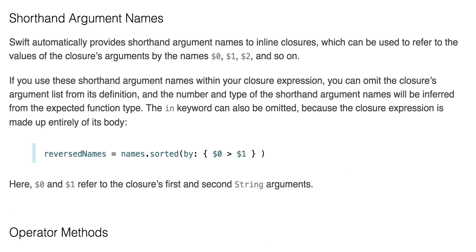Shorthand argument names: Swift automatically provides shorthand argument names to inline closures, which can be used to refer to the values of the closure's arguments by the names $0, $1, $2, and so on. If you use these shorthand argument names within your closure expression, you can omit the closure's argument list from the definition, and the number and type of the shorthand argument names will be inferred from the expected function type. The in keyword can also be omitted because the closure expression is made up entirely of the body. So $0 and $1 refer to the closure's first and second string arguments.